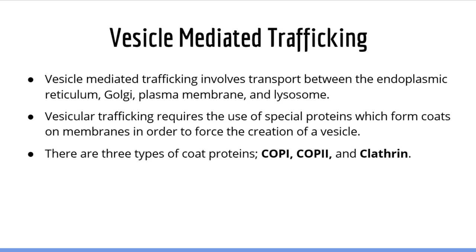There are three types of these coat proteins. They are called COP1, COP2, and Clathrin. As we will soon see, each one of these proteins creates vesicles that go to different places within the cell.